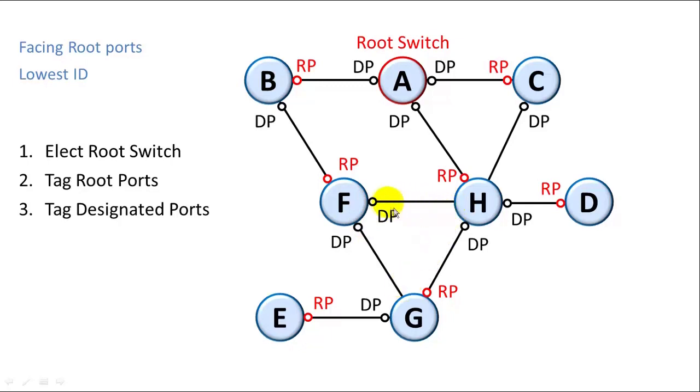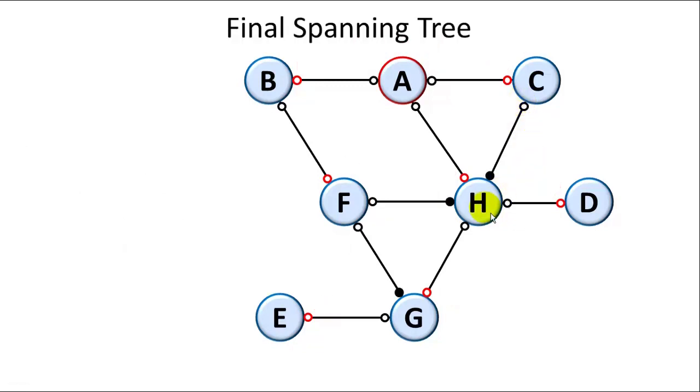So this port H that faces F, port G that faces F, and port H that faces C are going to be blocked ports. So we have three blocked ports. That finishes our minimum spanning tree.